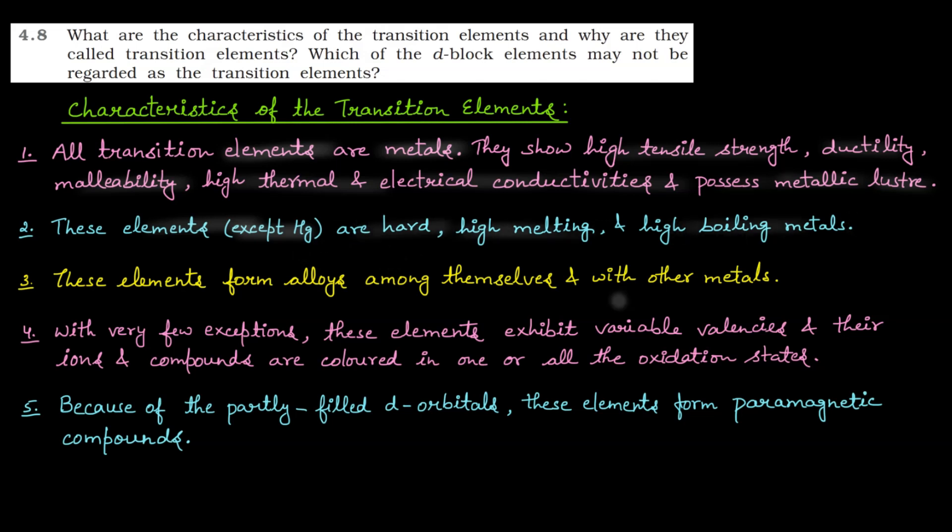Next one is, these elements form alloys among themselves and with other metals. Alloys are the homogeneous mixtures of metal-metal or metal and non-metal. So these transition elements form alloys.